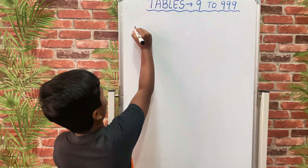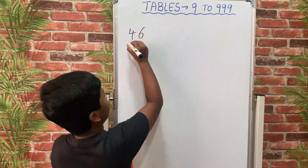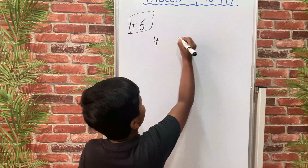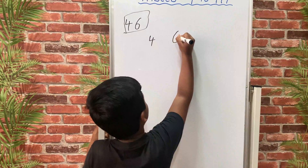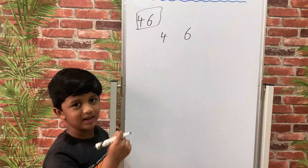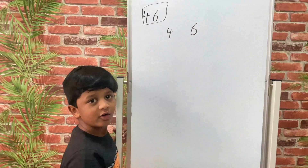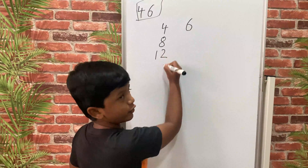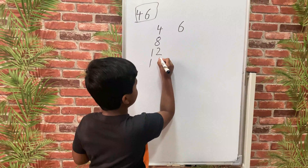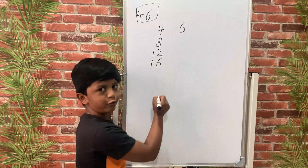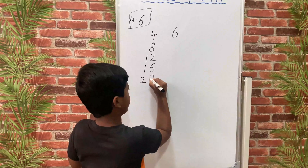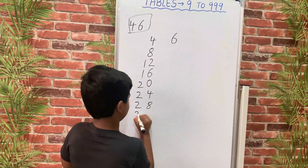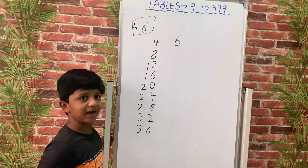Here we have 46. We will write the numbers separately: 4 and 6. Then we will write the 4 times table: 4×1 is 4, 4×2 is 8, 4×3 is 12, 4×4 is 16, 4×5 is 20, 4×6 is 24, 4×7 is 28, 4×8 is 32, 4×9 is 36, and 4×10 is 40.